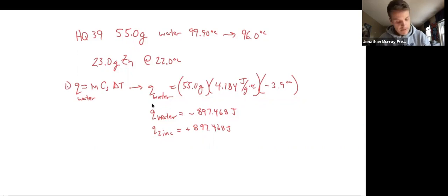So now we're gonna do the same calculation for zinc, except now in Q equals MC delta T, I know Q, I know the mass of zinc, I know the temperature change of zinc.